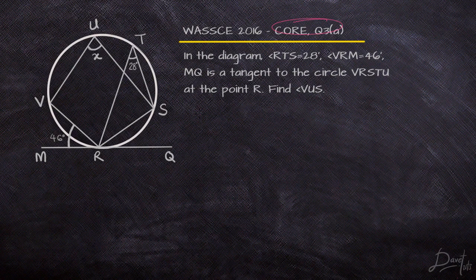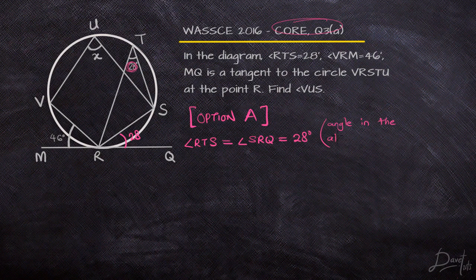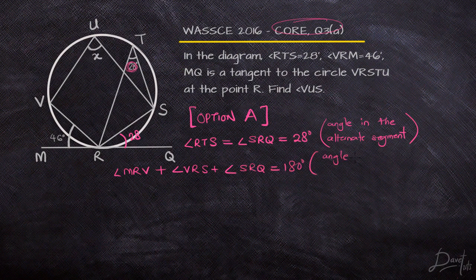This is the first question, and there are two ways we can solve it. The first option is to look at the angle we are given: 28°. Notice that it's going to be angle SRQ, because the tangent and chord make an angle of 28°, which is also the angle in the alternate segment of the circle. We are also given angle MRV as 46°, and angle SRQ as 28°.